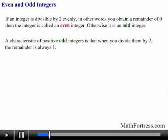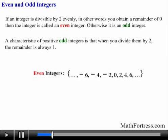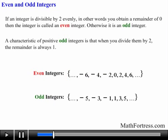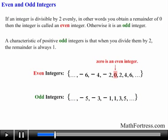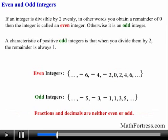Another characteristic of positive odd integers is that when you divide them by 2 the remainder is always 1. In general the set of even integers is denoted as follows, and the set of odd integers is denoted as follows. Notice that 0 is considered to be an even integer, so keep this little detail in mind. Also keep in mind that fractions and decimals are neither even nor odd — when we consider even and odd numbers we are referring to specific integers.